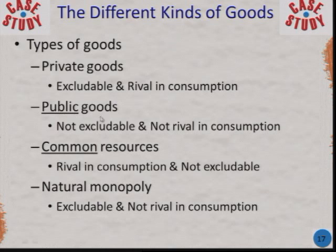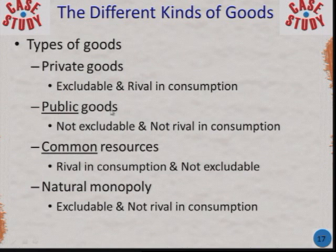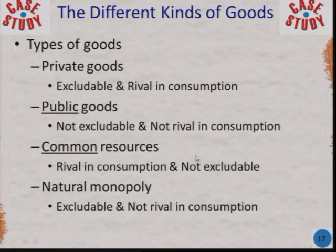To recap: public goods can't keep away people who haven't paid and don't get used up — examples are streetlights and fireworks shows. Common resources, like a dog park or Cameron Park, get used up if they get too crowded, but you can't keep away non-payers. The same applies to our highways. Now let's look at the other two types: private goods and natural monopolies.